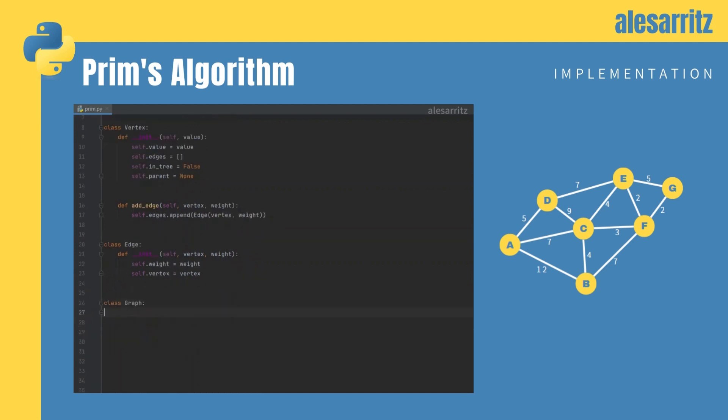Second, let's write the graph class. We will need the initialization function and another function to add vertices.